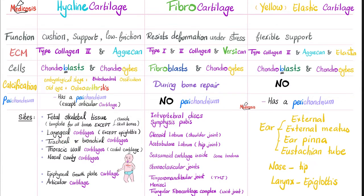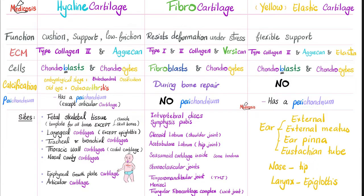Now, the extracellular matrix comparison: hyaline has type 2 collagen and aggrecan. Fibrocartilage has type 1 and 2 collagen and versican, which is secreted by the fibroblasts. Elastic cartilage has type 2 collagen and aggrecan — just like hyaline — plus elastic fibers such as elastin. For cells: hyaline has chondroblasts and chondrocytes; elastic is the same; fibrocartilage is stronger because it also has fibroblasts, or technically cells indistinguishable from fibroblasts.